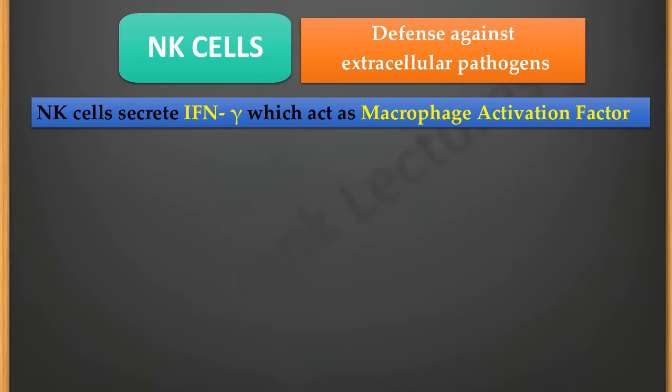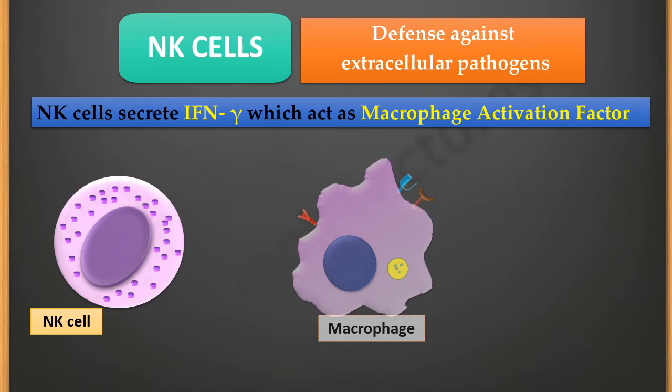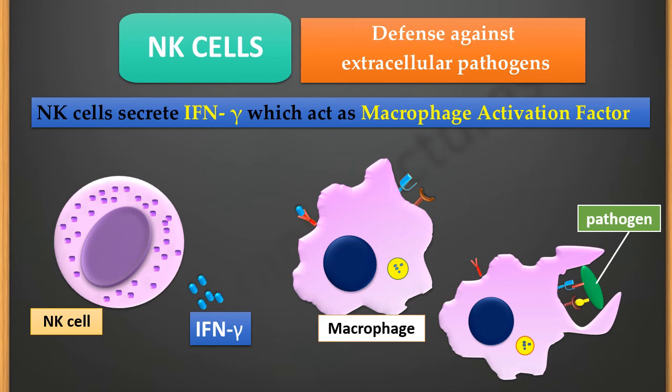NK cells secrete interferon gamma, that is type 2 interferon. This interferon acts as a macrophage activation factor — once released by the natural killer cell, it binds to specific receptors on the macrophages. As a result, the macrophage becomes more activated and more efficient in phagocytosis and destruction of the pathogens.